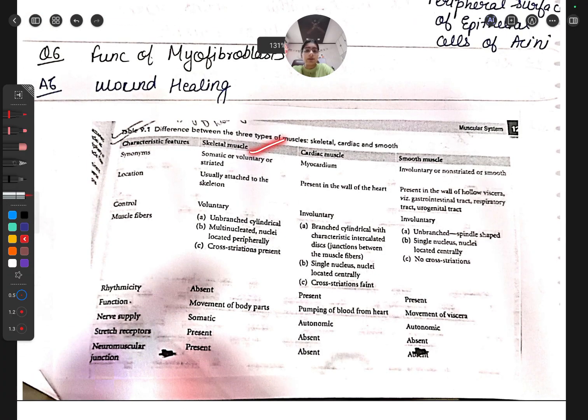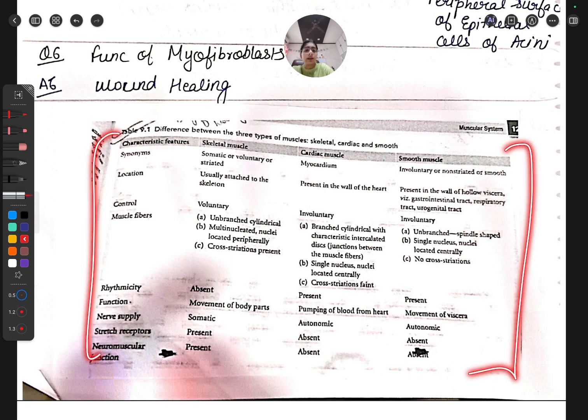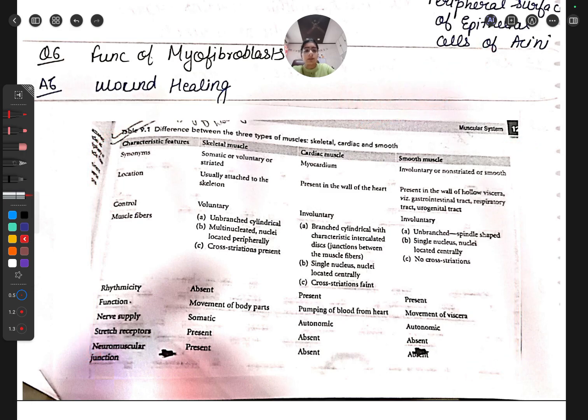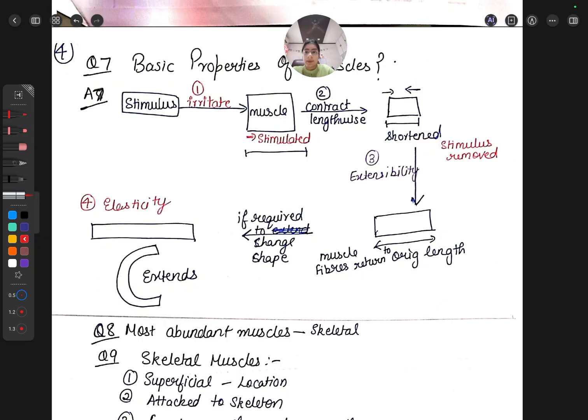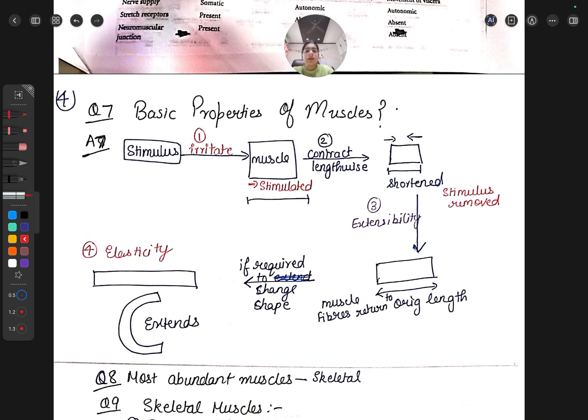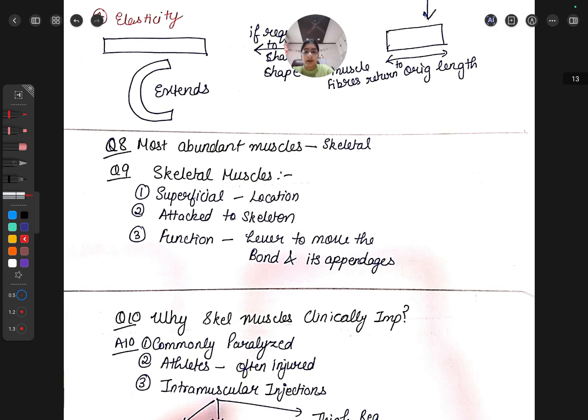The differentiation between the three types of muscle is already covered at the NEET level, so just revise it. If you have any doubts, put them in the comment box. Basic properties of muscle: there's stimulus, it will irritate, then contract, and it also has extensibility. Learn these four properties: irritability, contractility, extensibility, and elasticity.